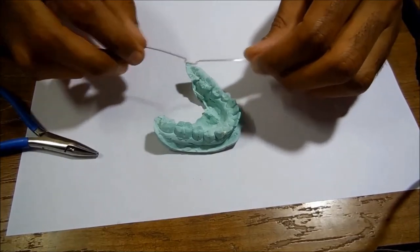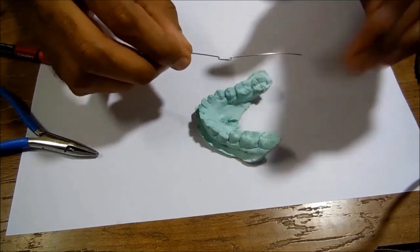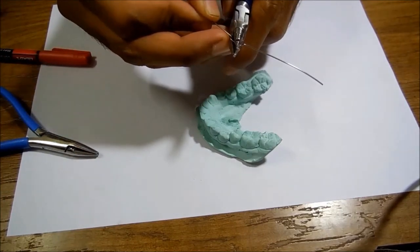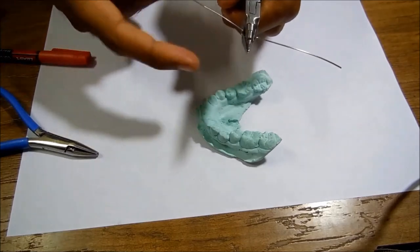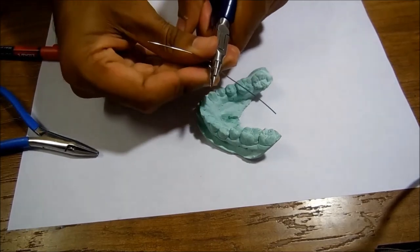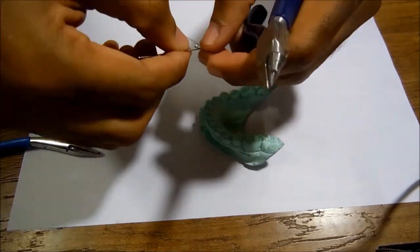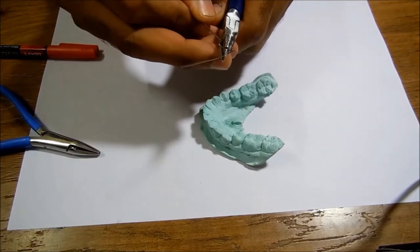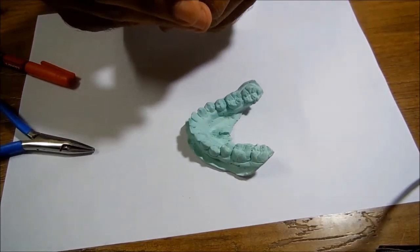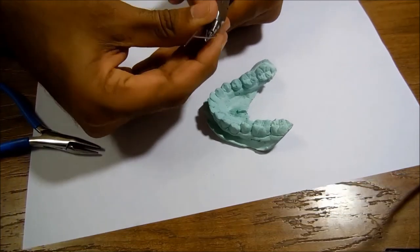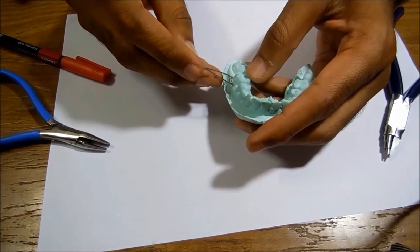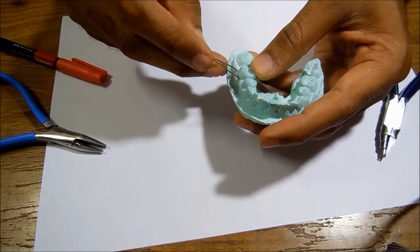Now after deciding the height of my Adams clasp, I need to give the arrowhead bend. This is something you need to very carefully see. I'll be holding this at this edge of my plier, hold it tight, and give it a bend like this. I'll show it on the other side as well. Hold it tight at this part of the Adams plier, give it up, hold it very tight. You need a good plier for this step and do it like this.